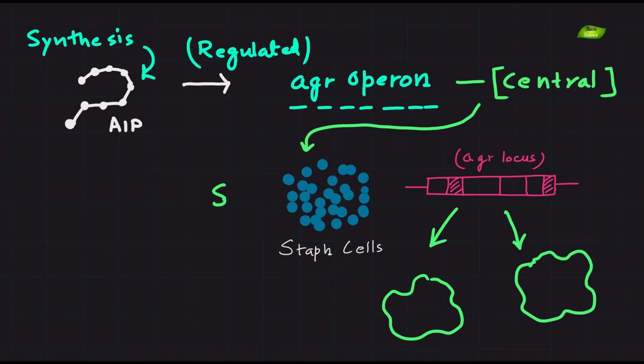The AGR operon is a central player in Staphylococcus quorum sensing, and its structural design varies among different Staphylococcus species, contributing to the specificity of the signaling process.